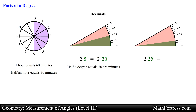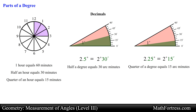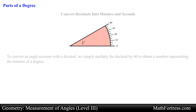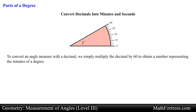Likewise, an angle that measures 2.25 degrees would be expressed as 2 degrees 15 minutes, since 15 minutes represents a quarter of a degree. In general, to convert an angle measure with a decimal, we simply multiply the decimal by 60 to obtain a number representing the minutes of a degree.